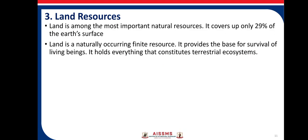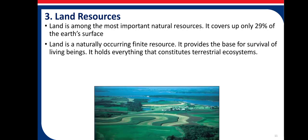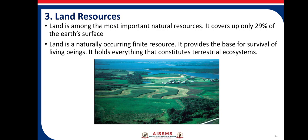The third type of natural resource is land resource. Land is among the most important natural resources and covers only 29% of the earth's surface. Land is a naturally occurring finite resource — it is finite because land covers only 29%. It provides the base for survival of living beings and holds everything that constitutes the terrestrial ecosystem, meaning living beings on the surface of earth.